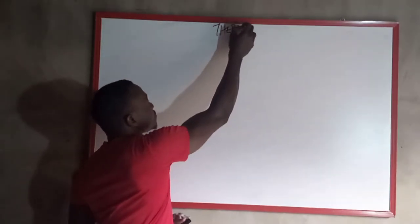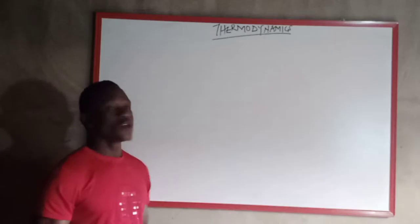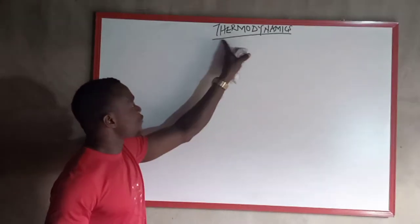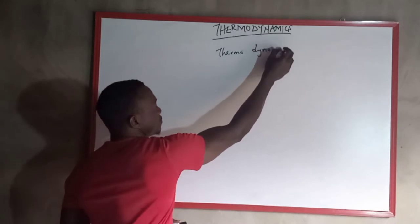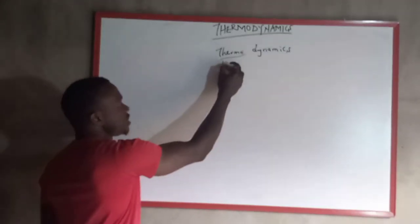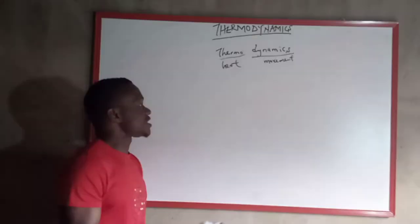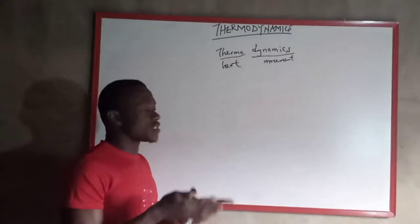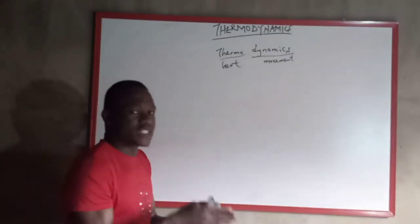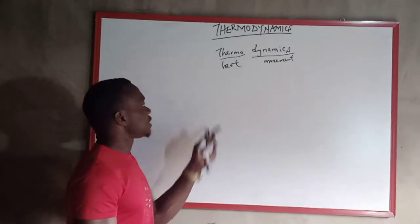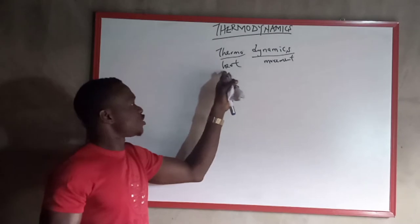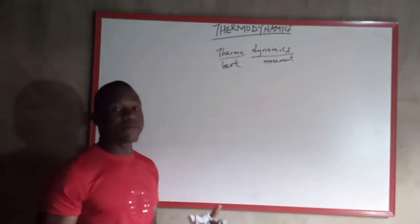Today we'll be going into thermodynamics. What is thermodynamics? It can be broken into two parts: 'thermo' means heat, and 'dynamics' means movement. So thermodynamics is the movement of heat in a particular system. Movement also has to do with work, because work is the product of force and distance. So thermodynamics is also the work done in a system by the application of heat.